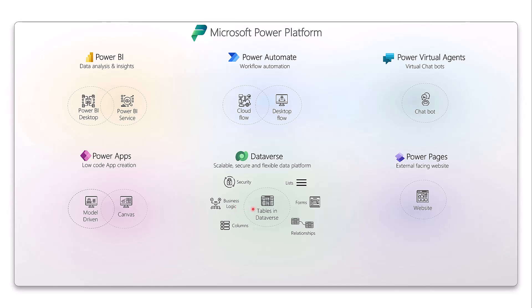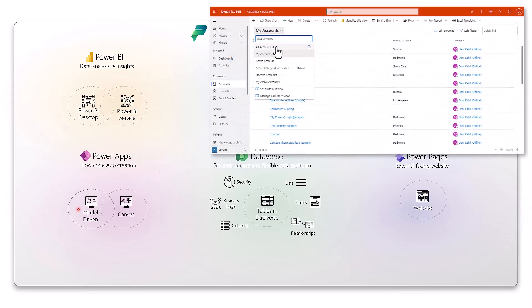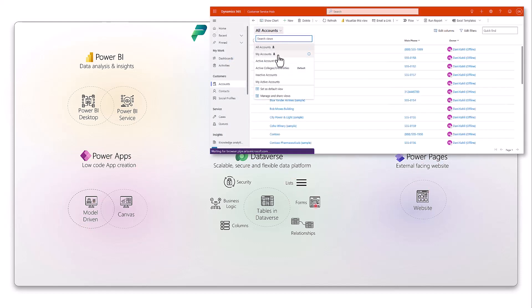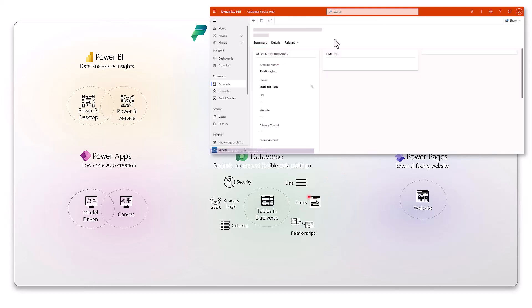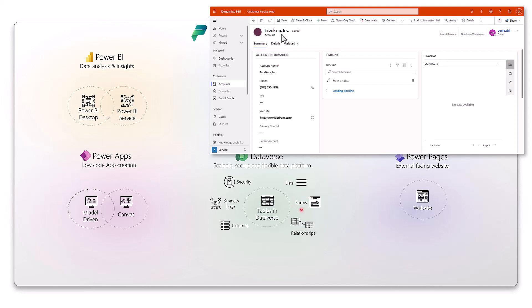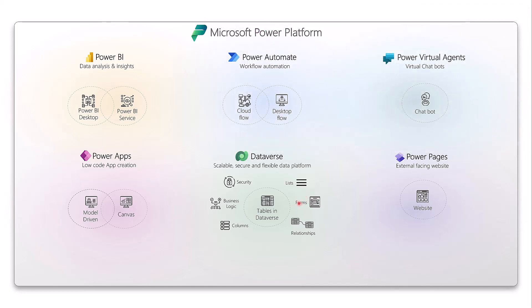In Dataverse you can define security — for specific tables you can define which table is visible to which role. You can even set security to specify which rows of each table are visible to each user. You can also define lists, which are lists of records that you can reuse in Power Apps or Power Pages to quickly display records. Forms are layouts on top of data where you can create or edit records, and you can pick and choose the forms from Dataverse that you want to include in your Power Apps or Power Pages.